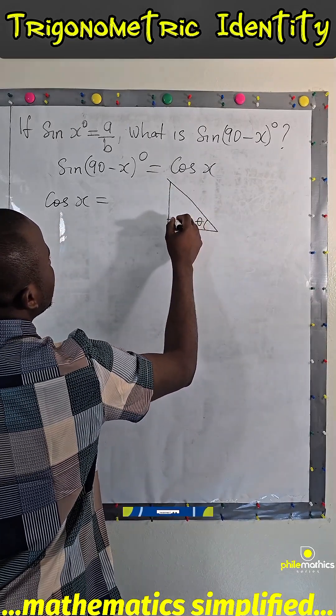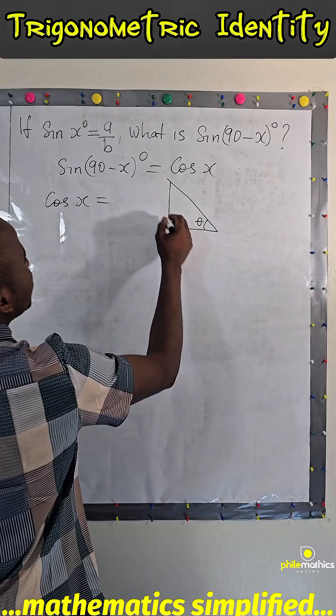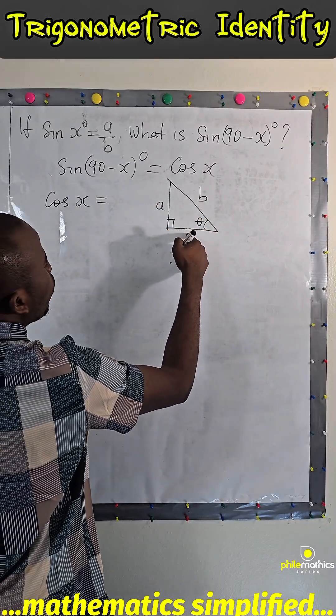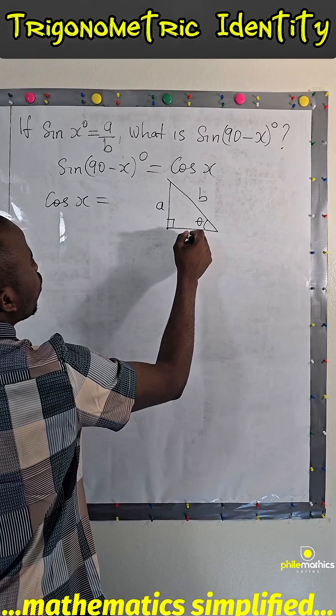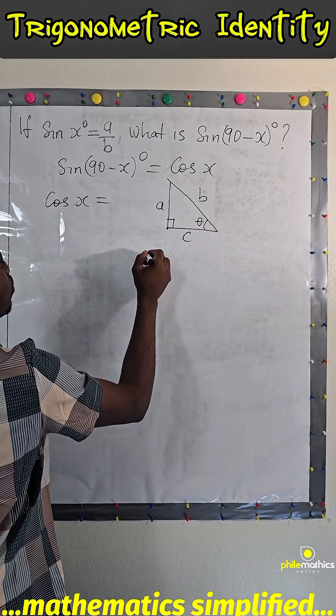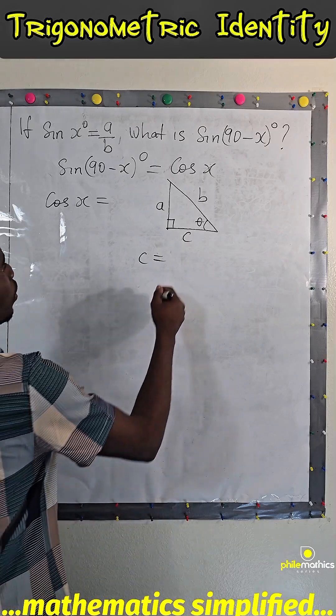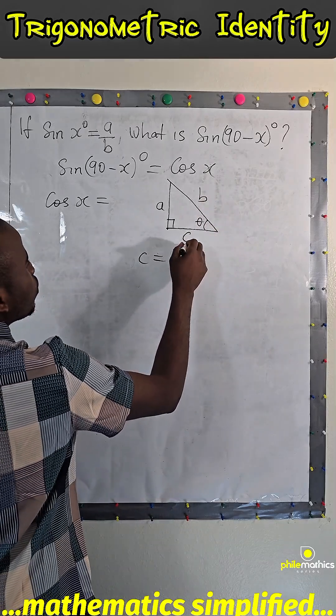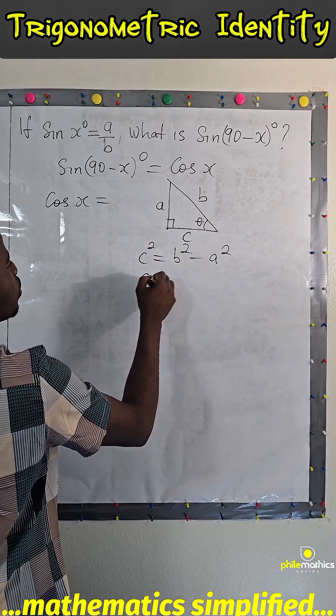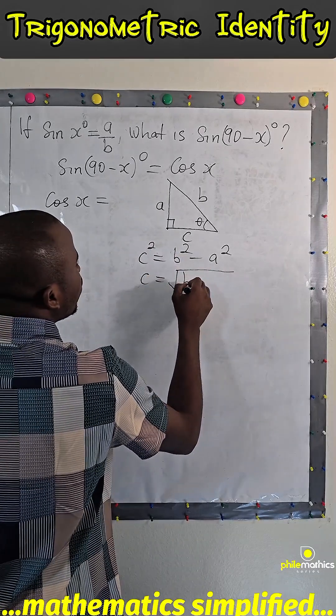This theta is the angle. Sine is opposite over hypotenuse. To find what this is, let's call it c. By Pythagorean theorem, c is b square minus a square, and so c is square root of b square minus a square.